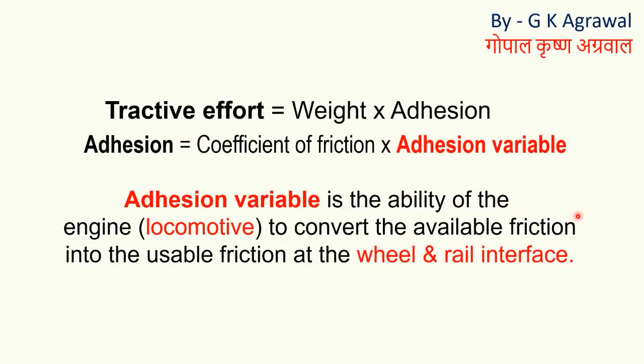Here I have given equation and definition of adhesion variable. Adhesion variable is the ability of the engine to convert the available friction into the usable traction at the wheel and rail interface.